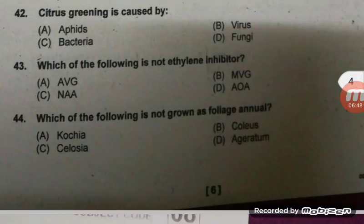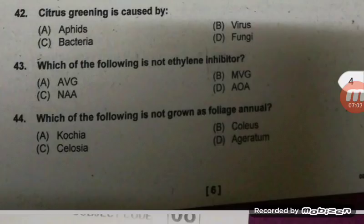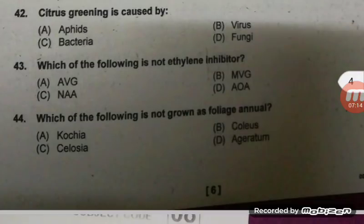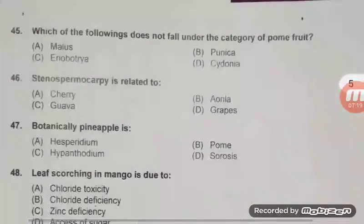Which of the following is not an ethylene inhibitor? Right answer is C — A is not an ethylene inhibitor; the others are. I will discuss more ethylene-related questions later. Which of the following is not grown as foliage annual? Kochia, Celosia, Coleus, and Ageratum — the right answer is D, Ageratum.